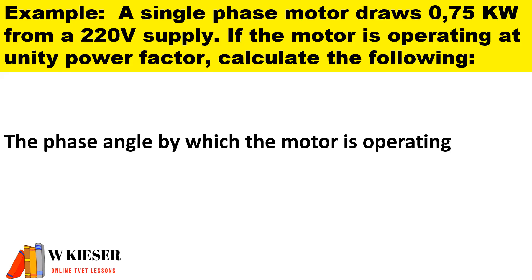To determine the phase angle by which the motor is operating, we utilize cos theta which is equal to 1 and we take cos across. So it becomes cos to the minus 1. With a perfect unity power factor it means the phase angle is 0 degrees and this implies that no energy is wasted so our machine is 100% efficient.